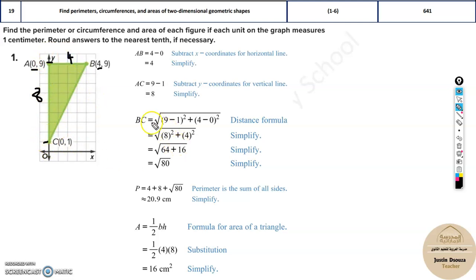In order to find BC, you need to use the distance formula: x2 minus x1 plus y2 minus y1, or you can write it as y2 minus y1 plus x2 minus x1. You will get the same answer. Here they have used y2 first: nine minus one the whole square plus four minus zero the whole square. Solve it up, you will get the answer, and then you can solve for the perimeter.